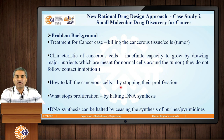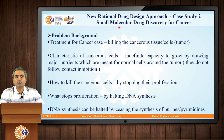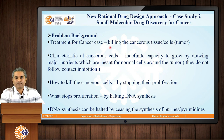Currently we are in an era where we make use of a modern approach called the rational drug design approach for drug discovery. Let us consider a case study of a small molecular drug discovery against cancer. To understand this methodology, we first need to understand the problem statement. We need a treatment for cancer, which means killing the cancerous tissue — the tumor. For that we should know the characteristics of cancerous cells and why they grow tumors.